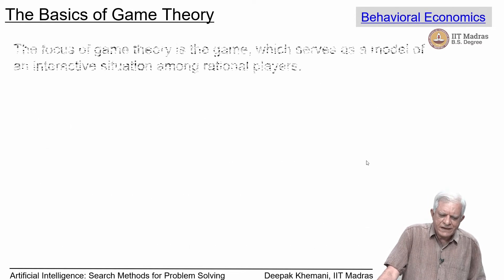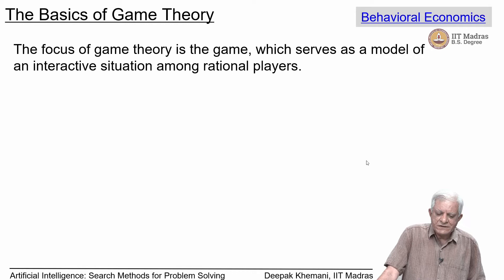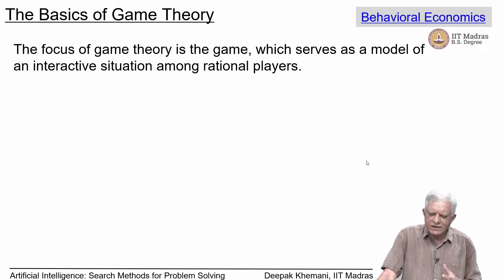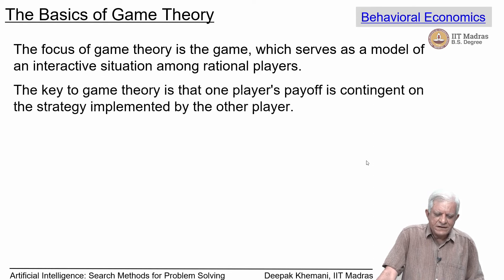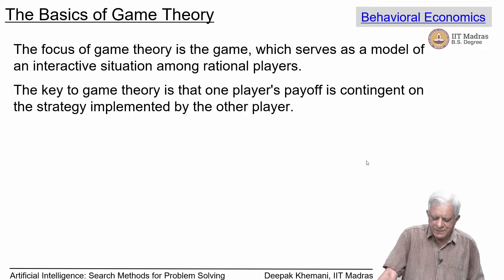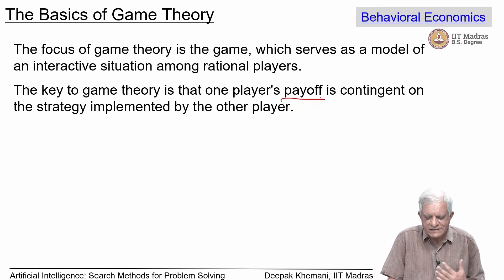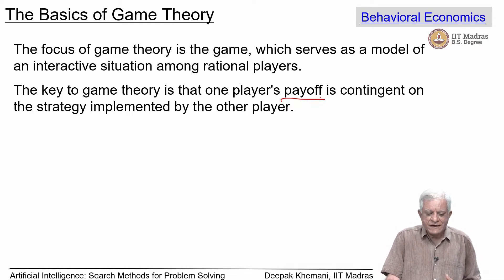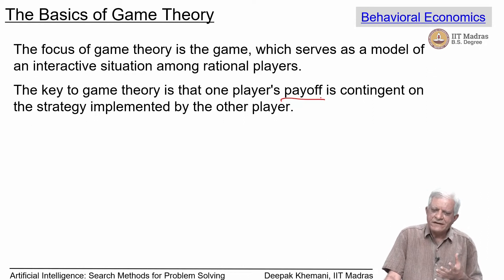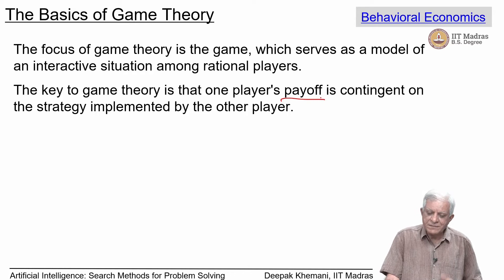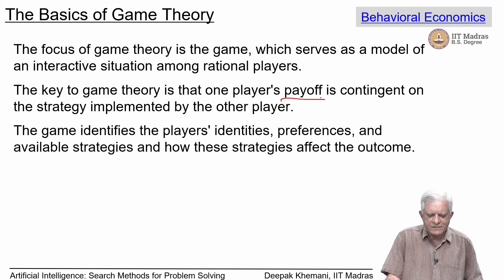So what is game theory again? The focus of game theory is a game, which serves as a model of an interactive situation amongst rational players. The key to game theory is that one player's payoff — and we use the term payoff for what is the gain you make as a consequence of the decisions you are making — is contingent on the strategy implemented by the other player. In game theory, you are not acting alone; there are other people also acting, and what will be the payoff for your actions is also determined by what other people's actions are. That is what makes games quite interesting.